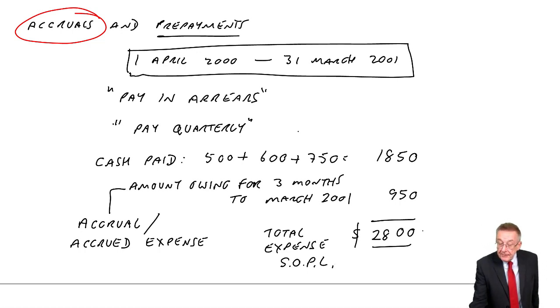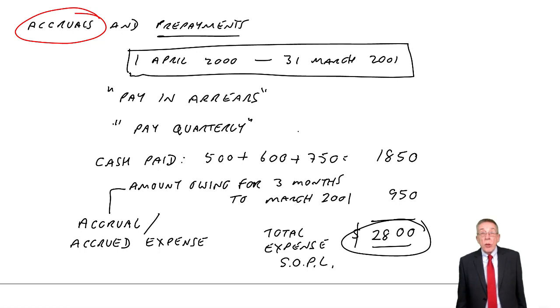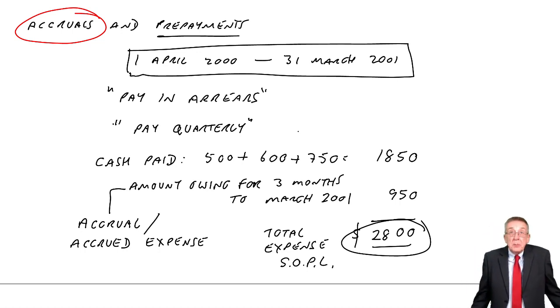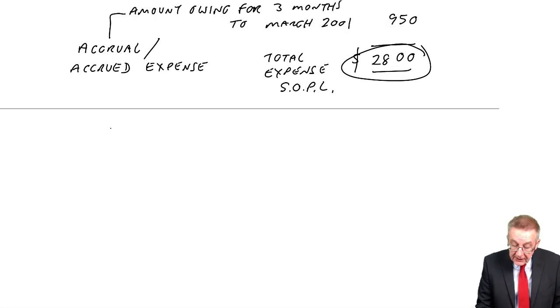As far as the accrual, the amount owing is concerned, well, it is like a payable. And so just like any payables, any amount owing will appear on the statement of financial position under the heading current liabilities.